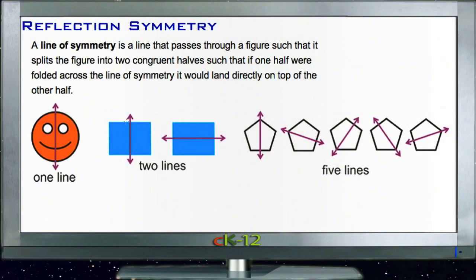Okay, let's talk reflection symmetry. A line of symmetry is a line you can draw through a figure that represents a place you could sort of fold the figure on itself and have it be the same on both sides.